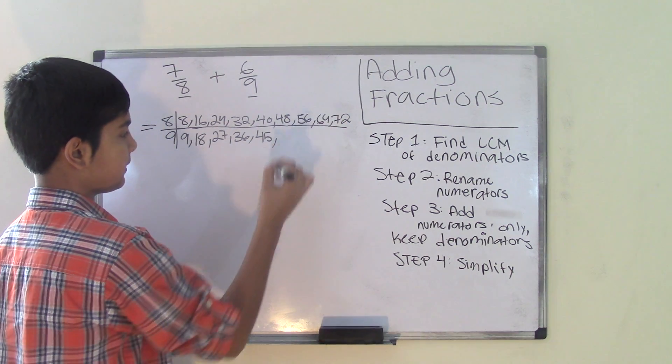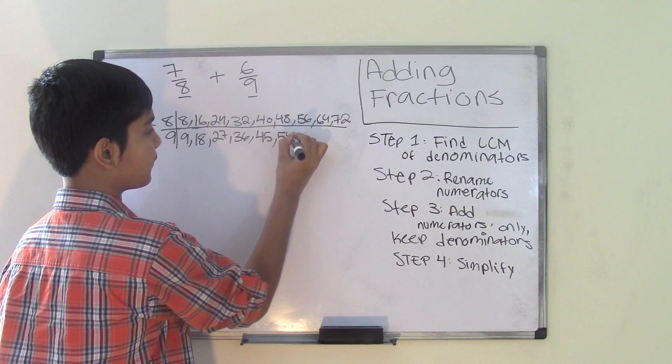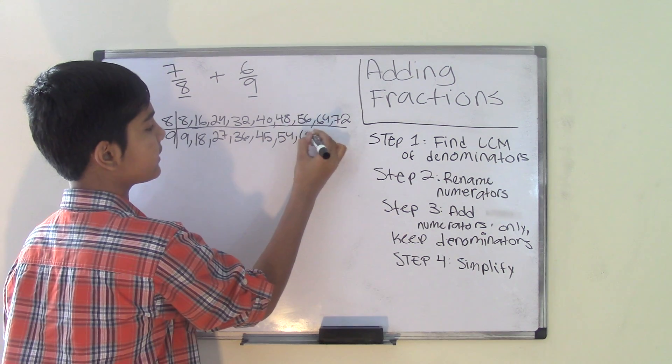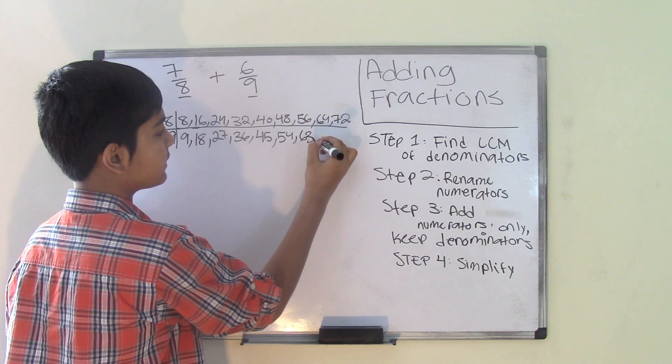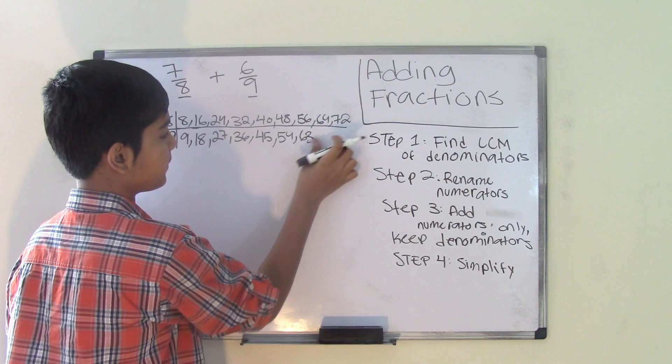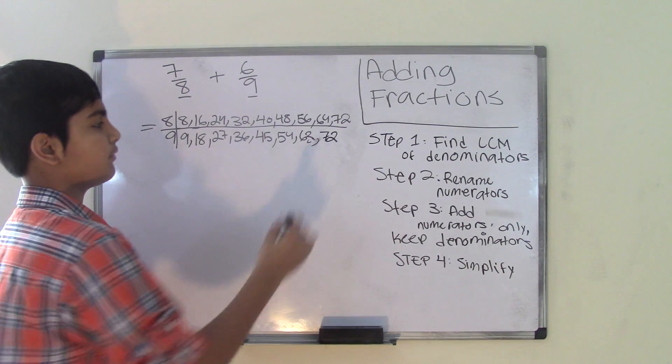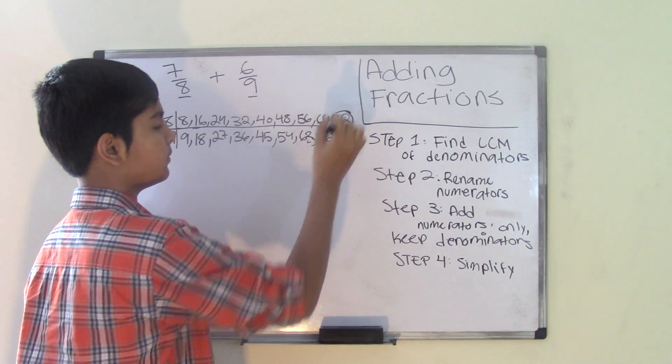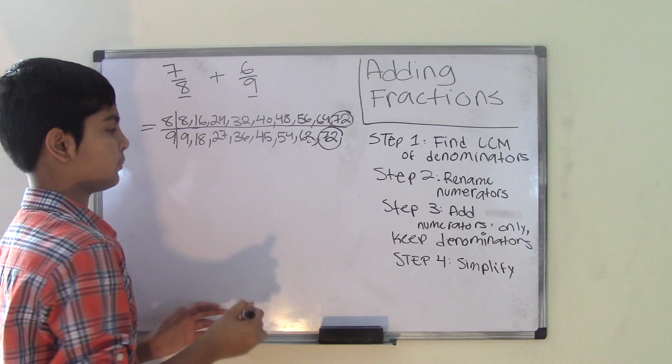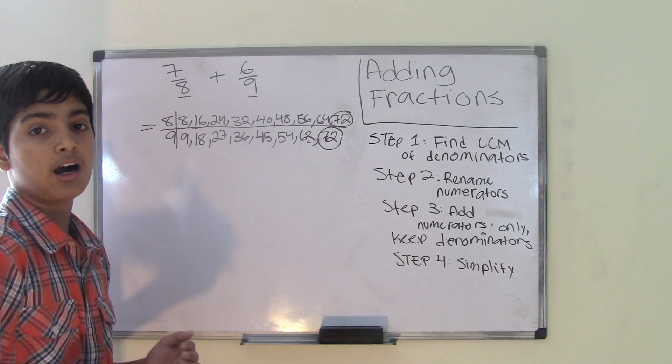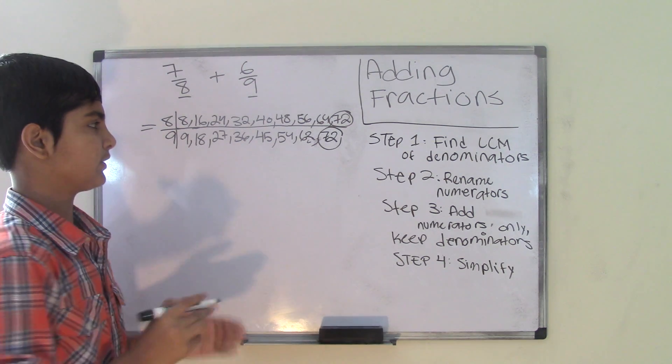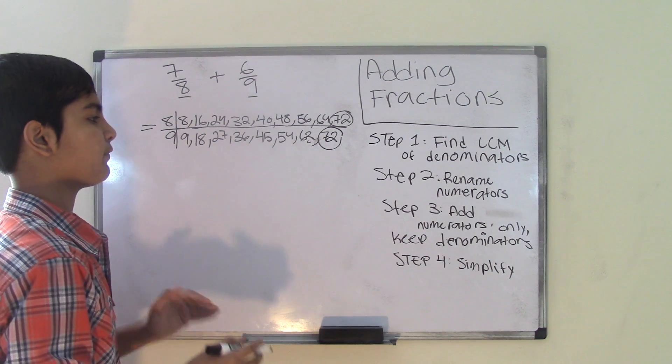9 times 8 is 72. Wait, 72 and 72. We found our first common multiple. So 72 is going to be our least common multiple, our LCM. Now that we find our LCM,